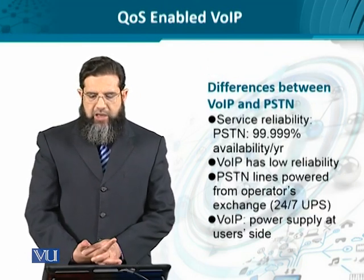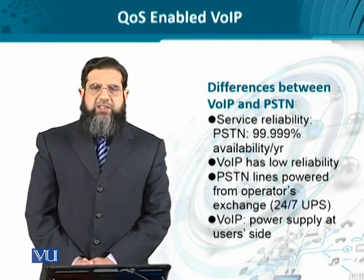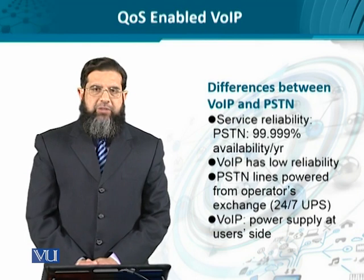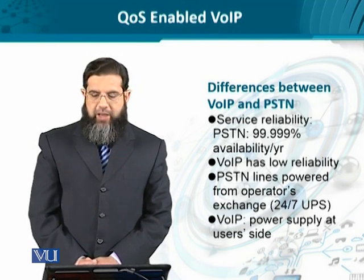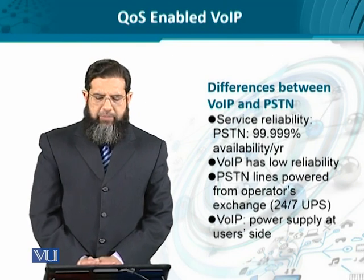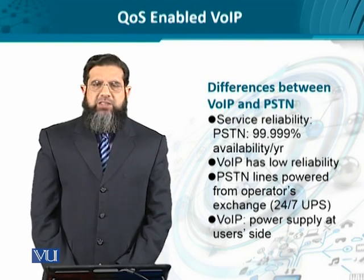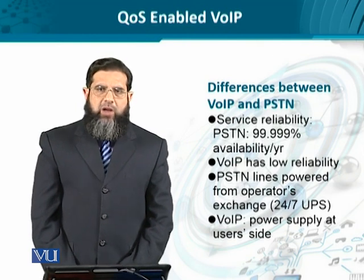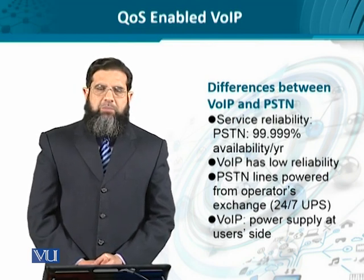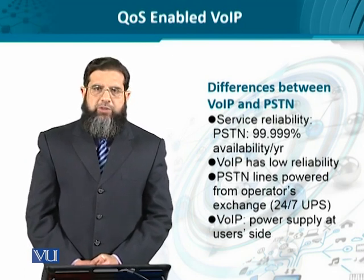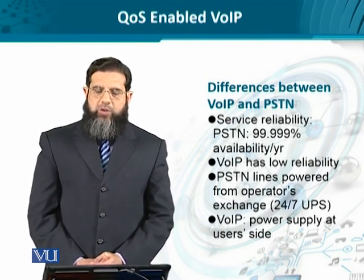Finally, availability and reliability of a system must be an important consideration. PSTNs have five-nines availability per year, which translates to about five minutes of downtime per year — an excellent reliability figure. VoIP-based NGNs have lower reliability, partly because in PSTNs the exchanges and telephone lines are powered by the operator, whereas in Voice over IP, the powering of end devices is the responsibility of the user. If there is no electricity at home, you will not be able to get voice service on NGN.